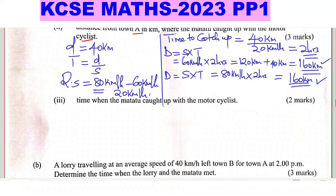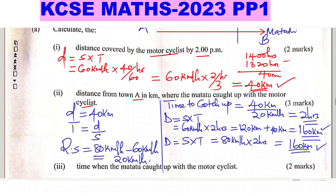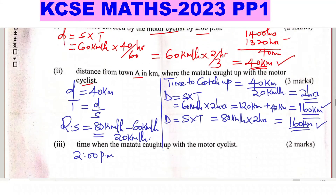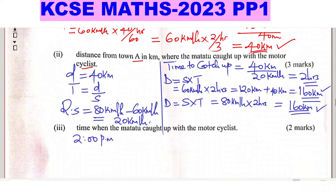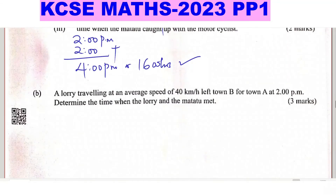Part (a)(iii): The time when the matatu caught up with the motorcyclist. The matatu began the journey at 2 PM and the time taken to catch up is 2 hours, so we add: 2 PM + 2 hours = 4 PM, or 16:00 hours.